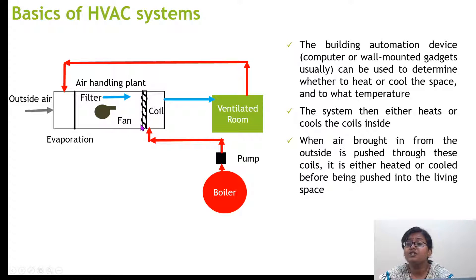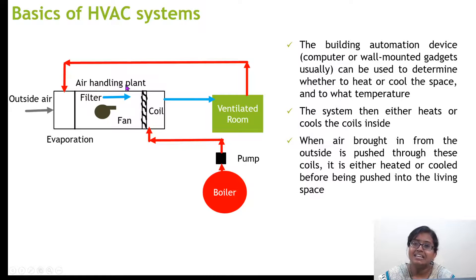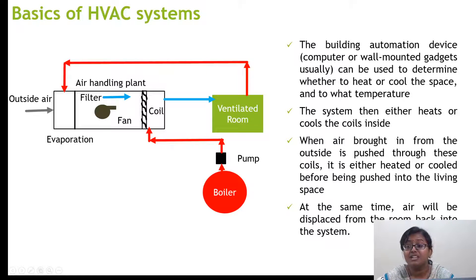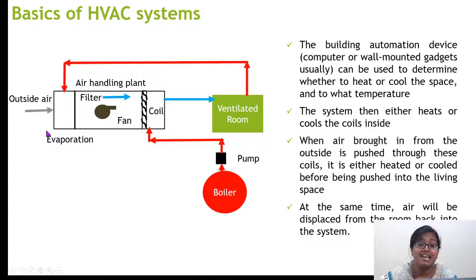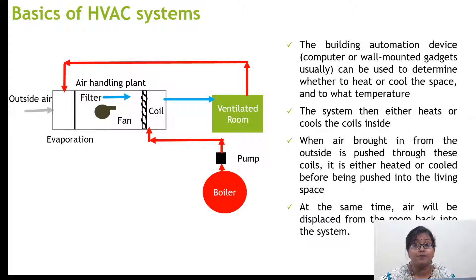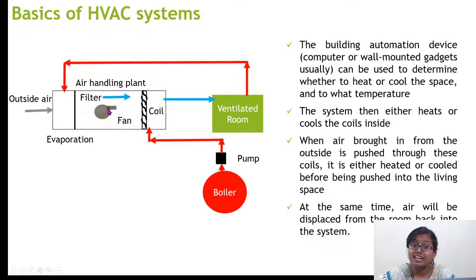When air brought in from outside is pushed through this coil, it is either heated or cooled before being pushed into the living space. The outside air should not go directly into the room — it has to pass through an air handling unit. At the same time, air is displaced from the room back into the system for proper ventilation. Whatever air it receives is recycled back to the air handling plant. Inside this air handling plant there are filters which purify the air, removing dust particles and toxic elements.